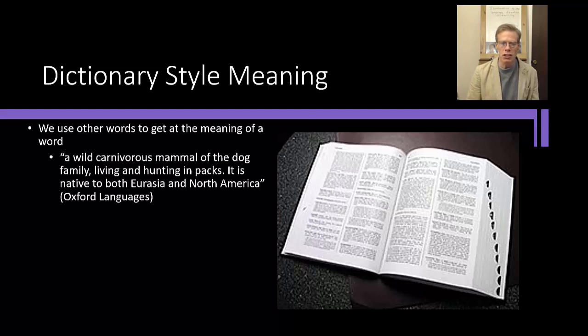So for example, the dictionary, the Oxford Languages Dictionary, defines a wolf as a wild carnivorous mammal of the dog family living and hunting in packs. It is native to both Eurasia and North America.